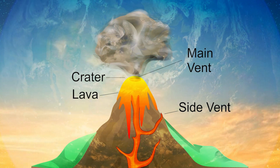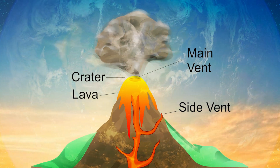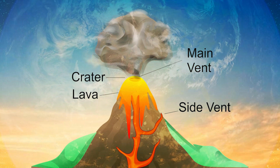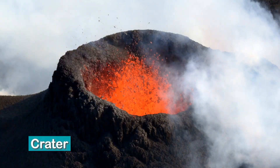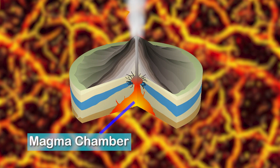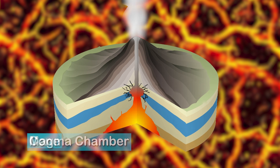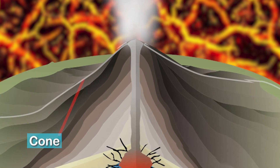Once magma starts moving towards the crust or reaches the surface, it is referred to as lava. A volcano is composed of a vent from where the magma comes out, a crater which is a bowl-shaped structure at the mouth of the volcano, a magma chamber where the hot magma is stored below the Earth's surface, and a cone which is formed by the solidification of lava and ashes.